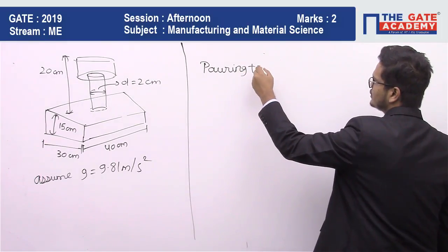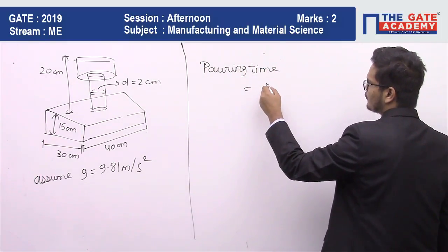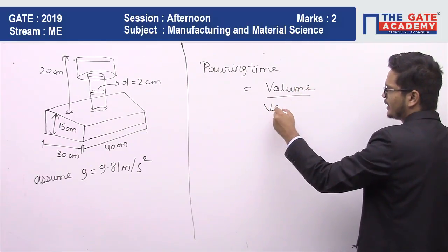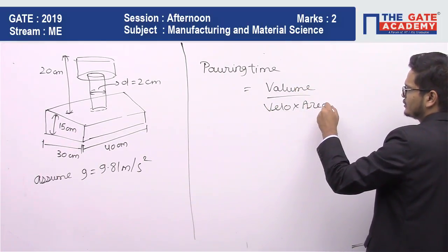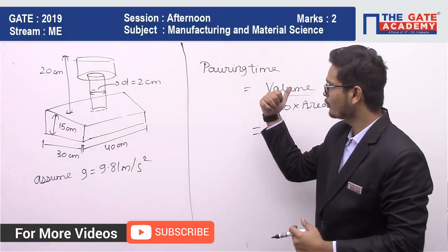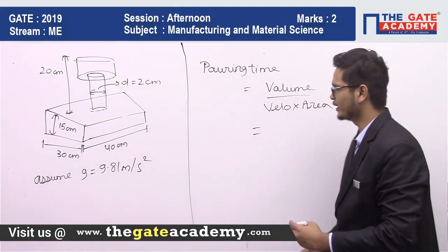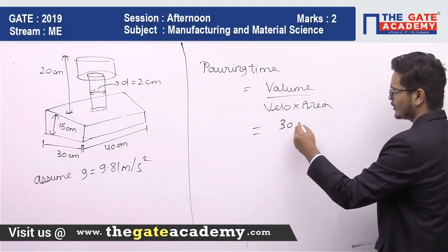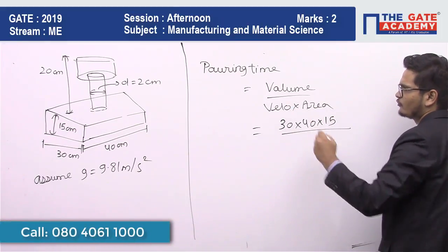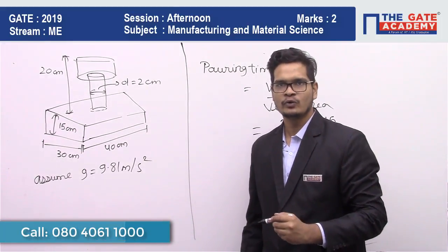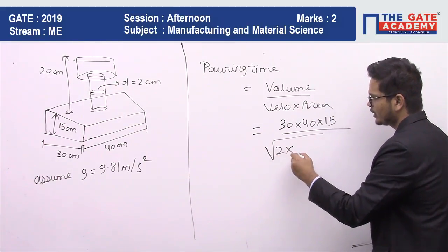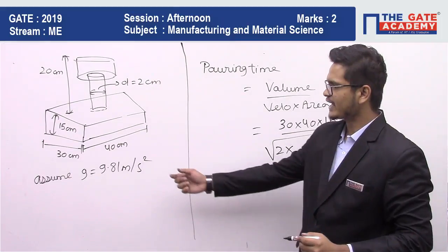Pouring time is equal to volume upon velocity into area. Volume is the volume of the cavity, so 30 into 40 into 15. Upon velocity, which is root over of 2gh. Root over of 2 into g — g is the acceleration due to gravity.